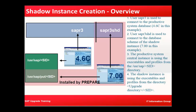In the shadow instance creation, this is your SAP R3 system — for example, a 4.6c system — and this is the installation by prepare. You have the user sap<sid> as your SAP system. The user SAP R3 is used to connect to the productive system, while the user SAP R3 SHD is used to connect to the database schema of the shadow instance.